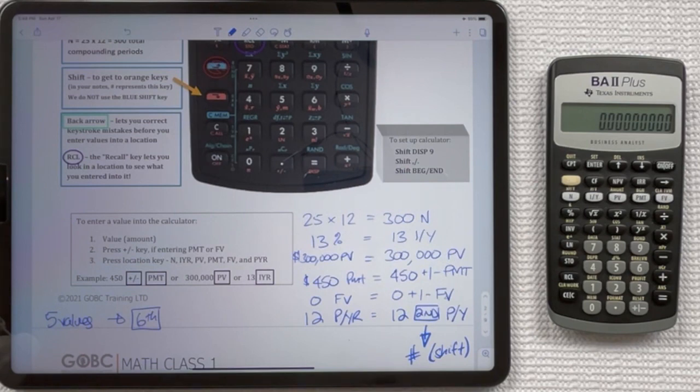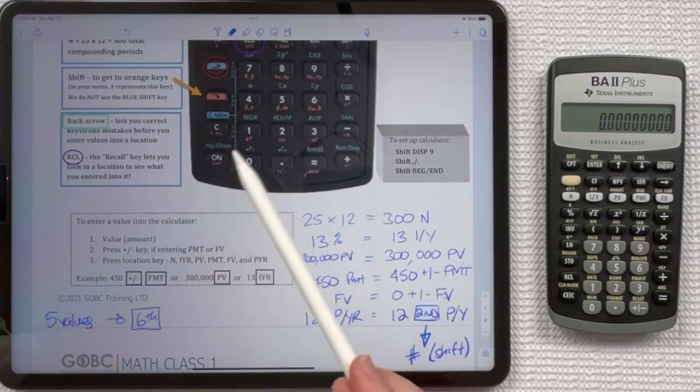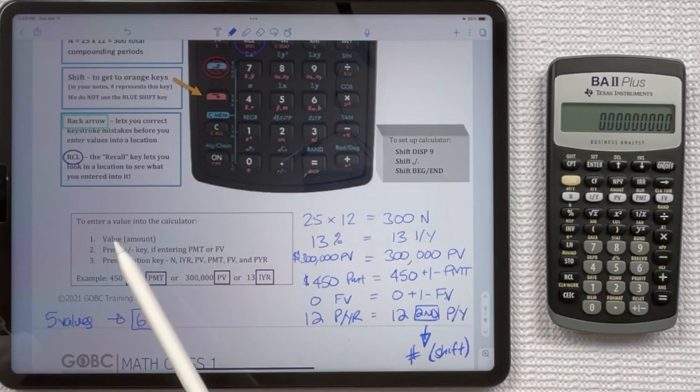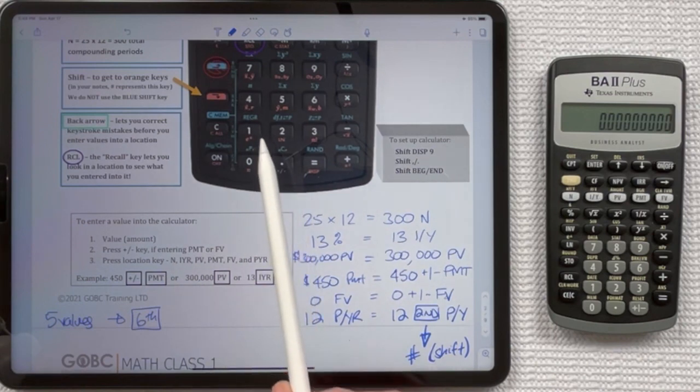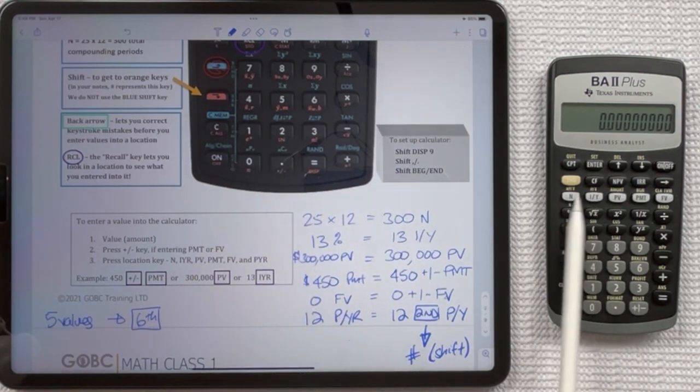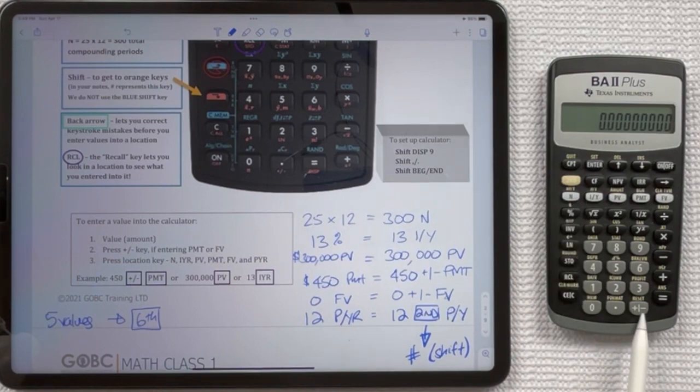So just want to mention that before we start. For this one here, we said for the HP, you always put the value into the calculator first, then you use the plus minus key if you need to, which is here on the calculator instead of it being up in this area on the HP calculator. It's down here.